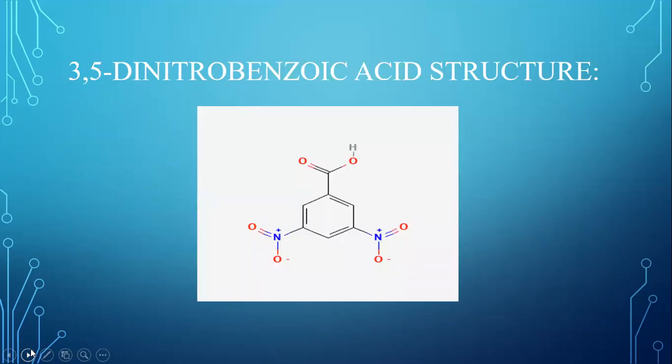Now you can see the structure of 3,5-Dinitrobenzoic acid. It is similar to the, it is almost similar with the structure of benzoic acid. But the only difference is that two nitro groups are attached to the metaposition of the benzene ring. And it's the structure of 3,5-Dinitrobenzoic acid as you can see in the figure.